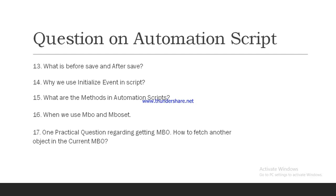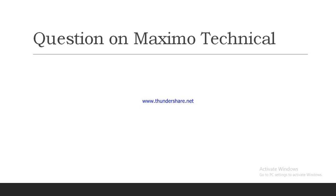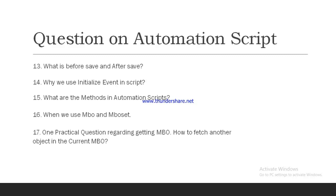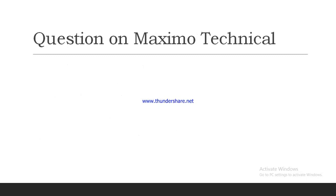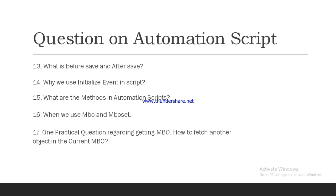The interviewer asked five to six questions about automation scripts, so you should know them very well. If you know at least two or three launch points — attribute launch point, object launch point, and action launch point — that will be very useful. He also asked practical questions: how to get the MBO, how to fetch the MBO, and how to get or set data in the automation script.